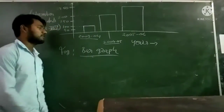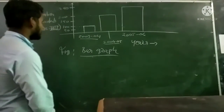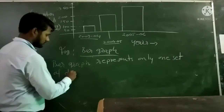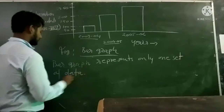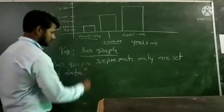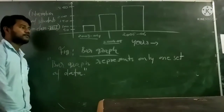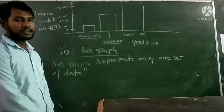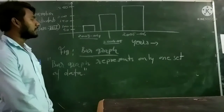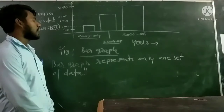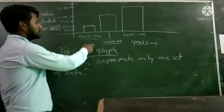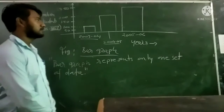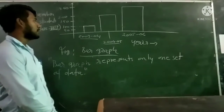In the case of bar graphs, bar graph represents only one set of data. Here the number of students during a particular year at a particular station is represented by a bar graph.